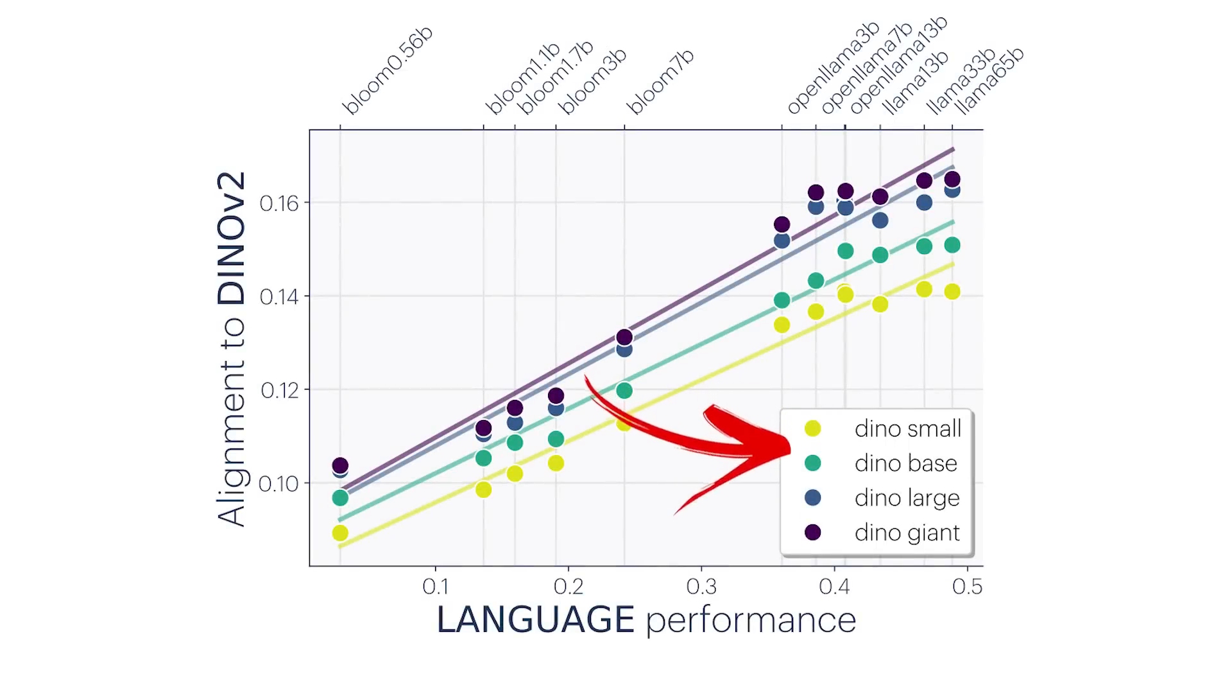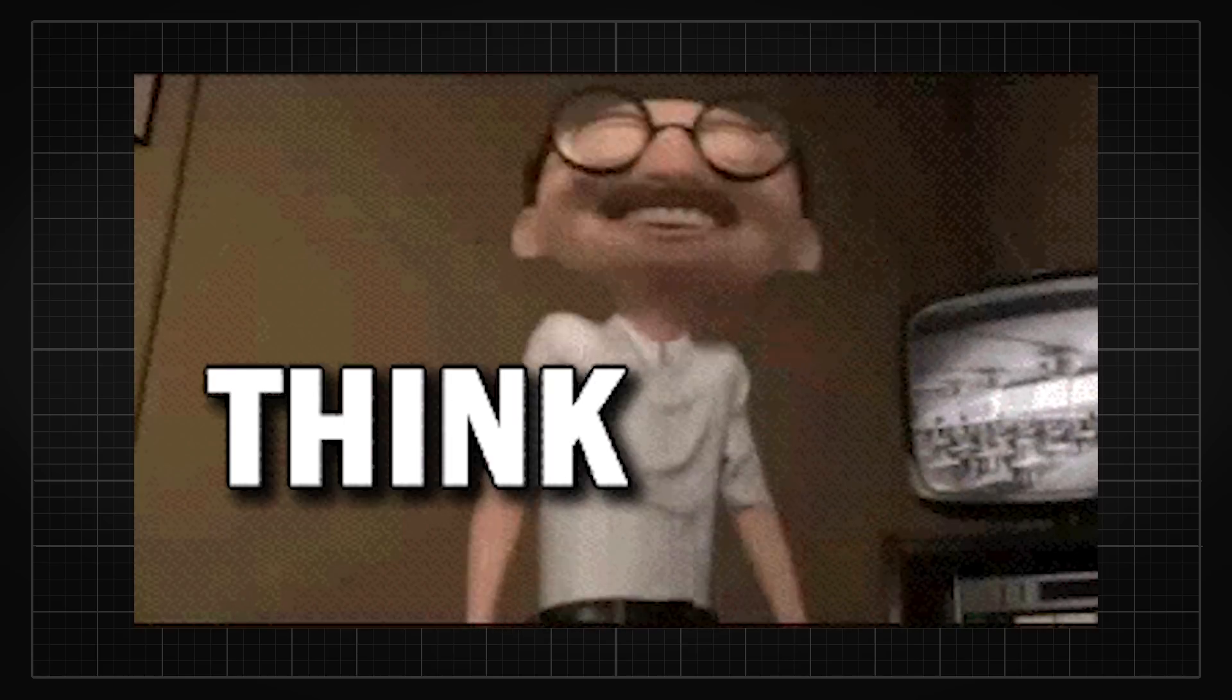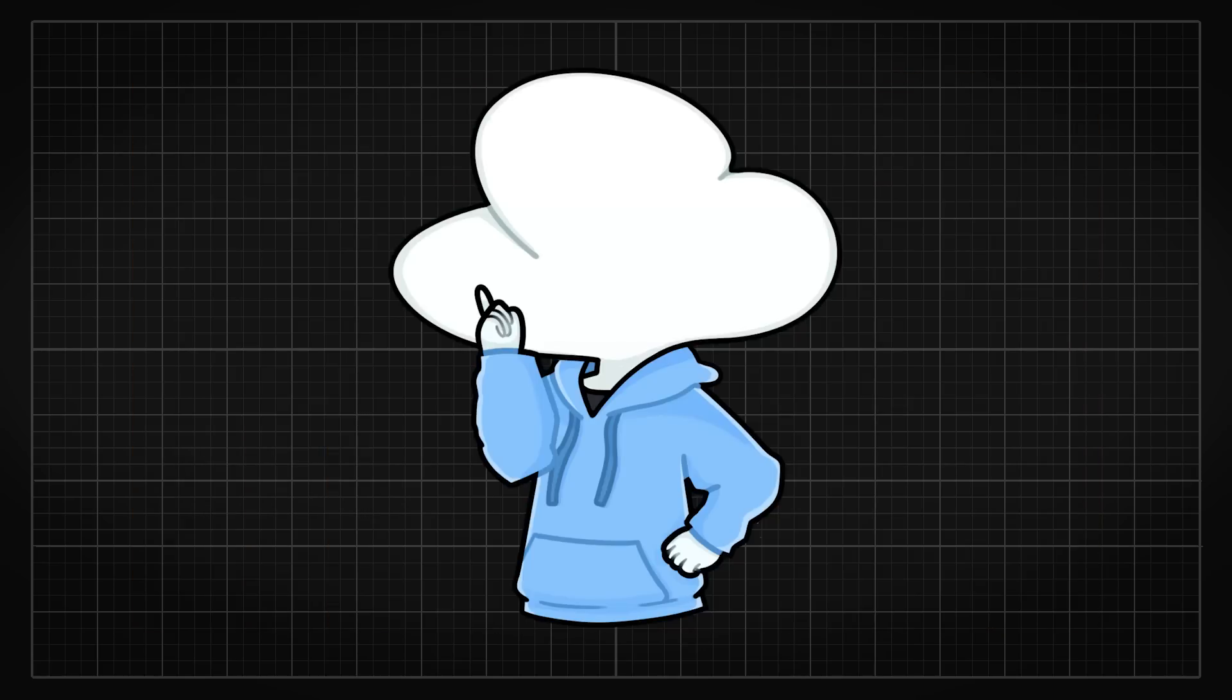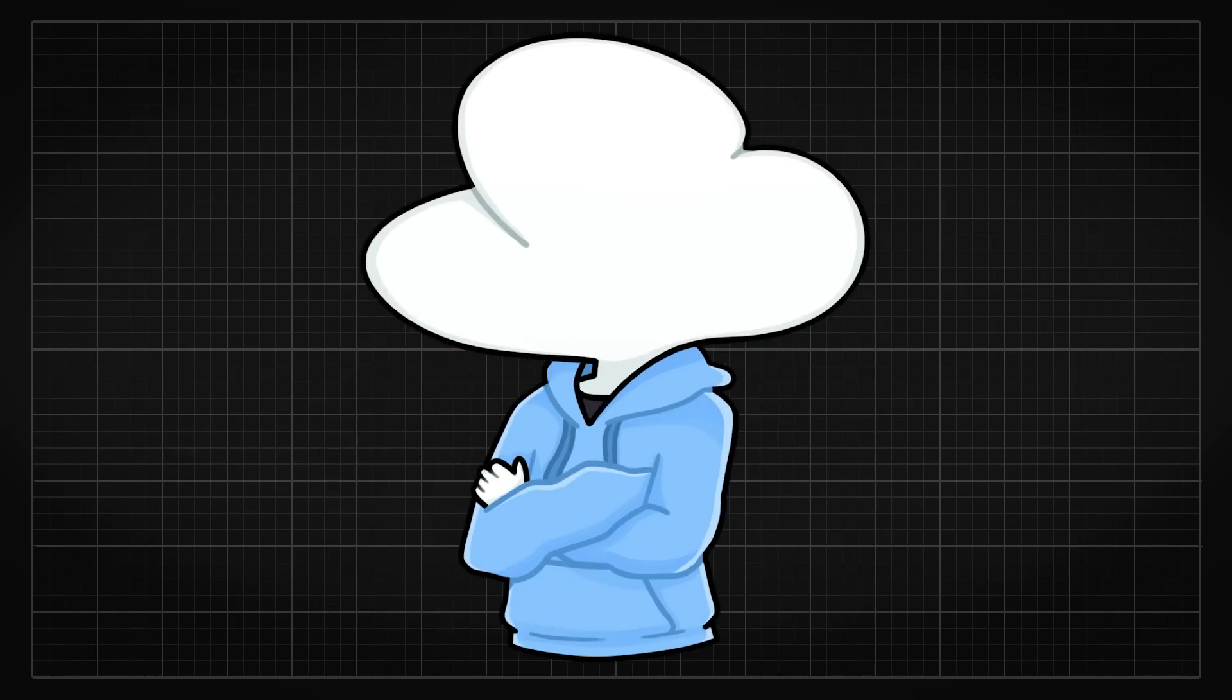Here's another diagram of theirs showing different sizes of Dyno V2 have the same relation trends, and look at how the correlation is very consistent throughout, which kind of shows that it's not really a coincidence. So these observations can mean a lot of things. Let me break it down.